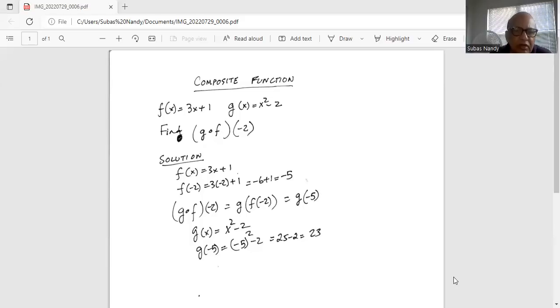So now we have to find out the functional value of g of x with x as minus 5. So g of x is x square minus 2. So g of minus 5 is minus 5 whole square minus 2. So minus 5 times minus 5 is positive 25 minus 2 is 23. That is the final answer.